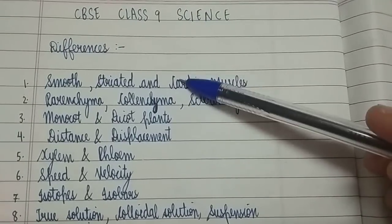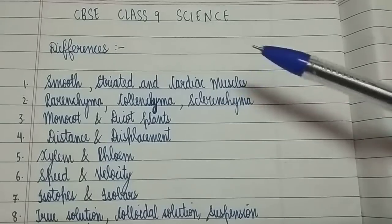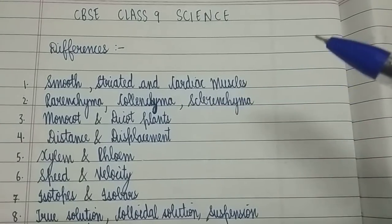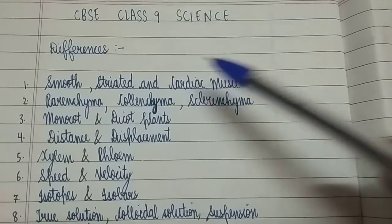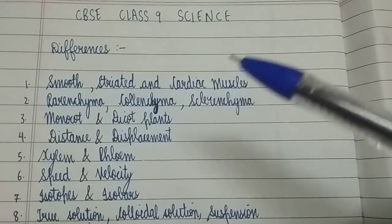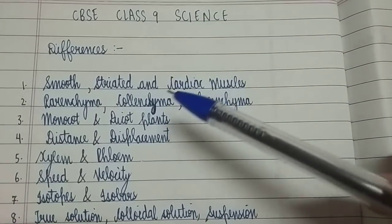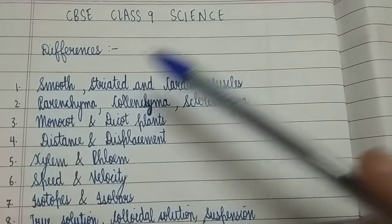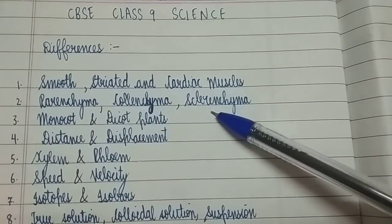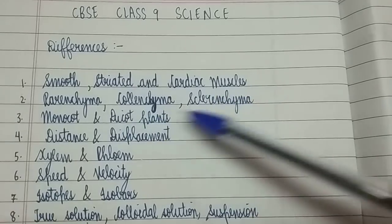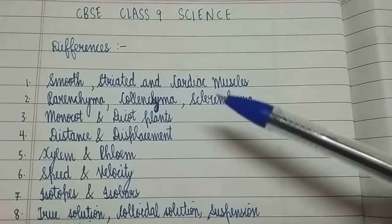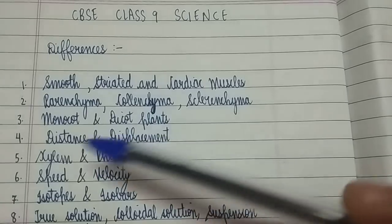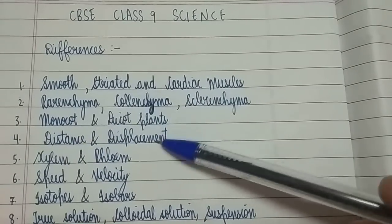First, in the differences section: smooth, striated, and cardiac muscles — this difference is asked very frequently and can come for five marks directly. Then you have parenchyma, colenchyma, and sclerenchyma — this can come for one to two marks. Then monocot and dicot plants, which is for three marks.